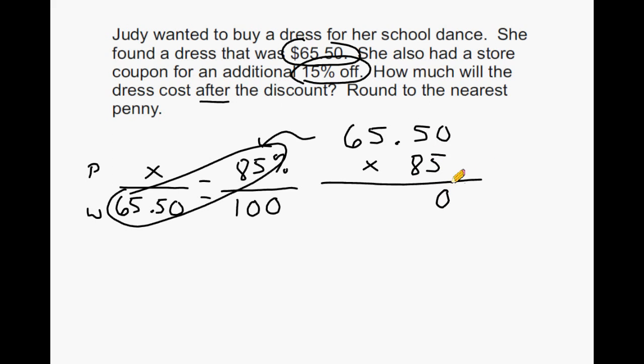5 times 0 is 0, 5 times 5 is 25, carry the 2, 5 times 5 is 25, plus 2 is 27, and 5 times 6 is 30, plus 2 is 32. And then we put a 0 in this place value. And multiply 8 by every digit on the top. 8 times 0 is 0, 8 times 5 is 40, carry the 4, 8 times 5 is 40 as well, plus another 4 is 44. And 8 times 6 is 48, plus 4 is 52.